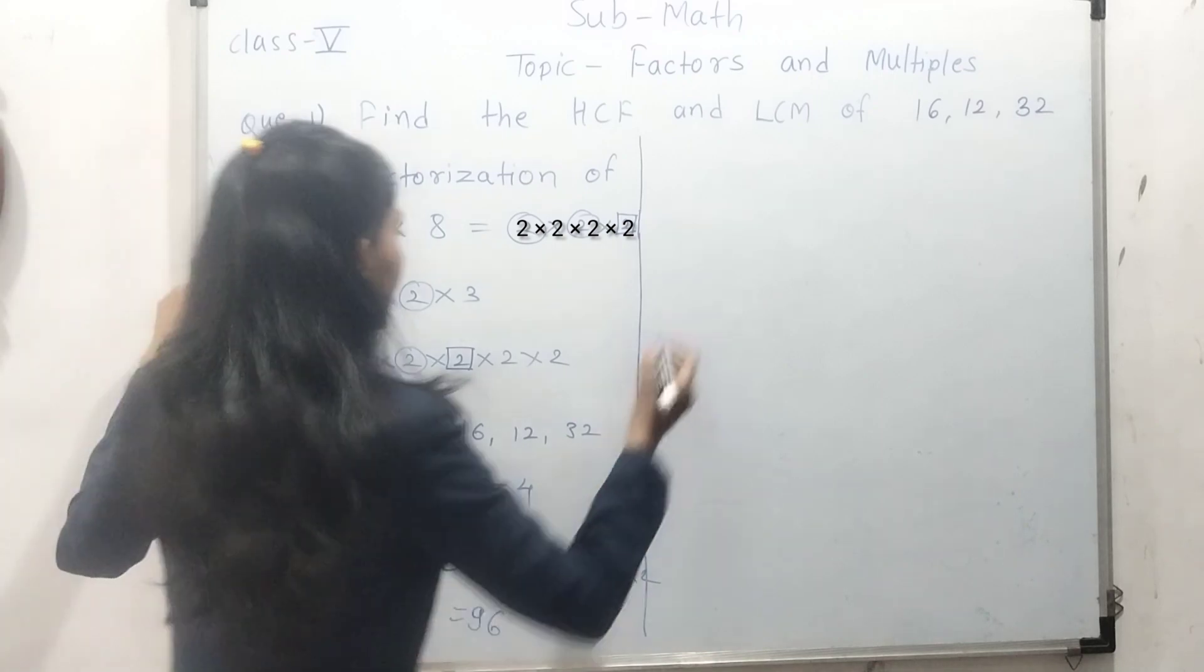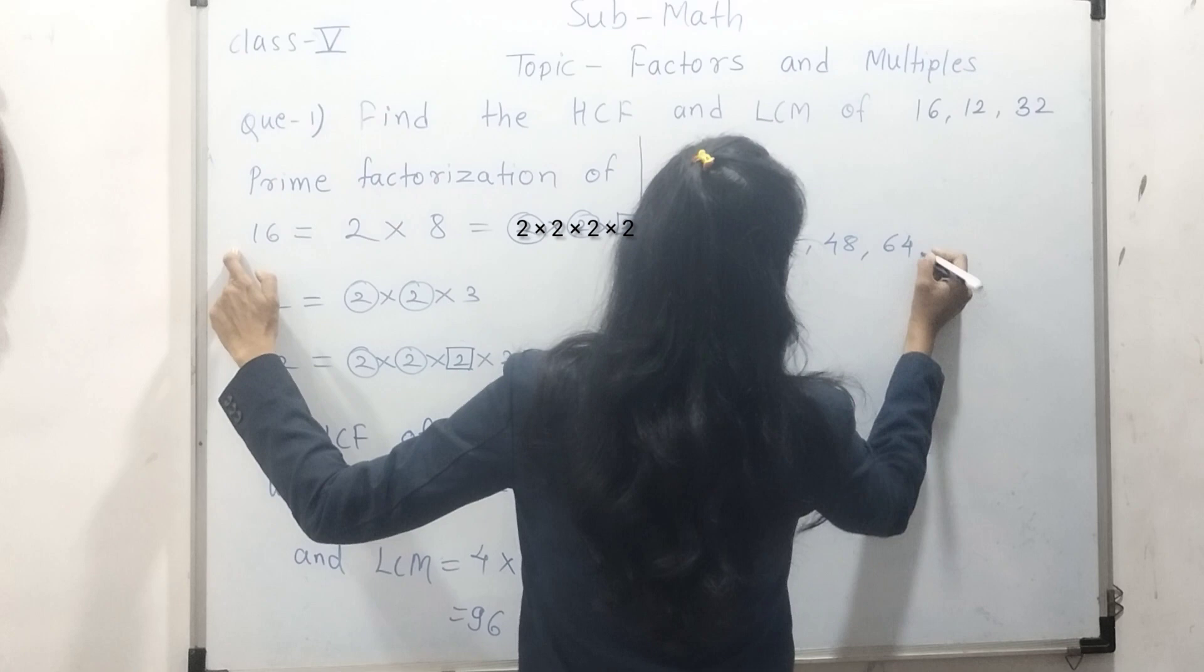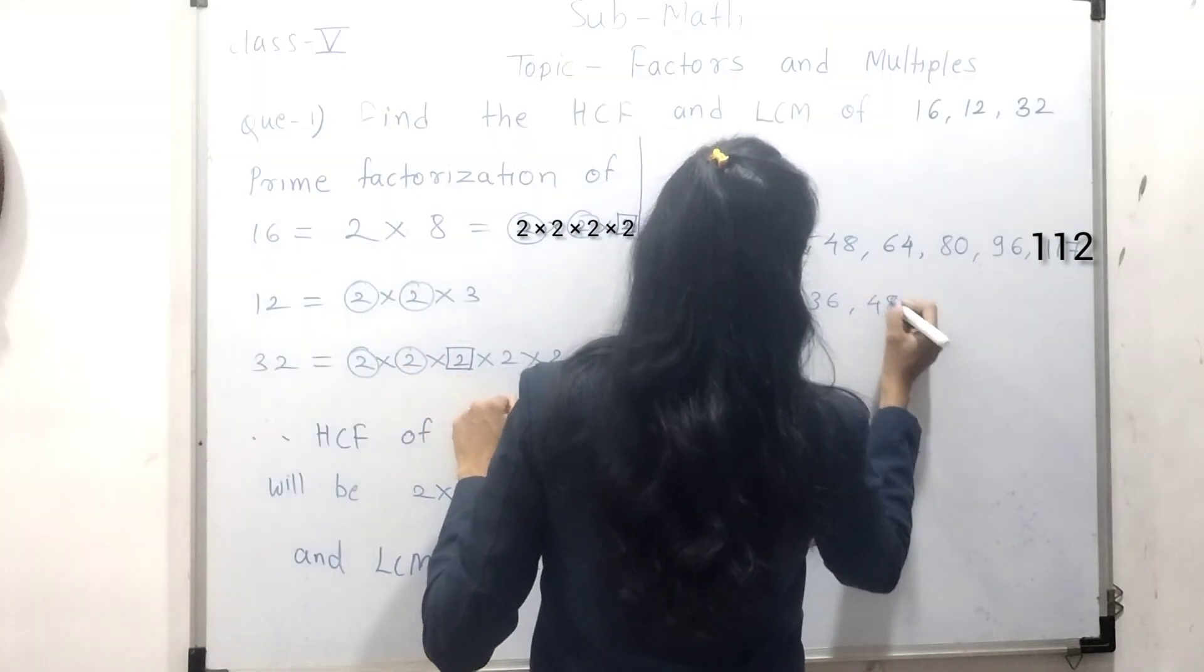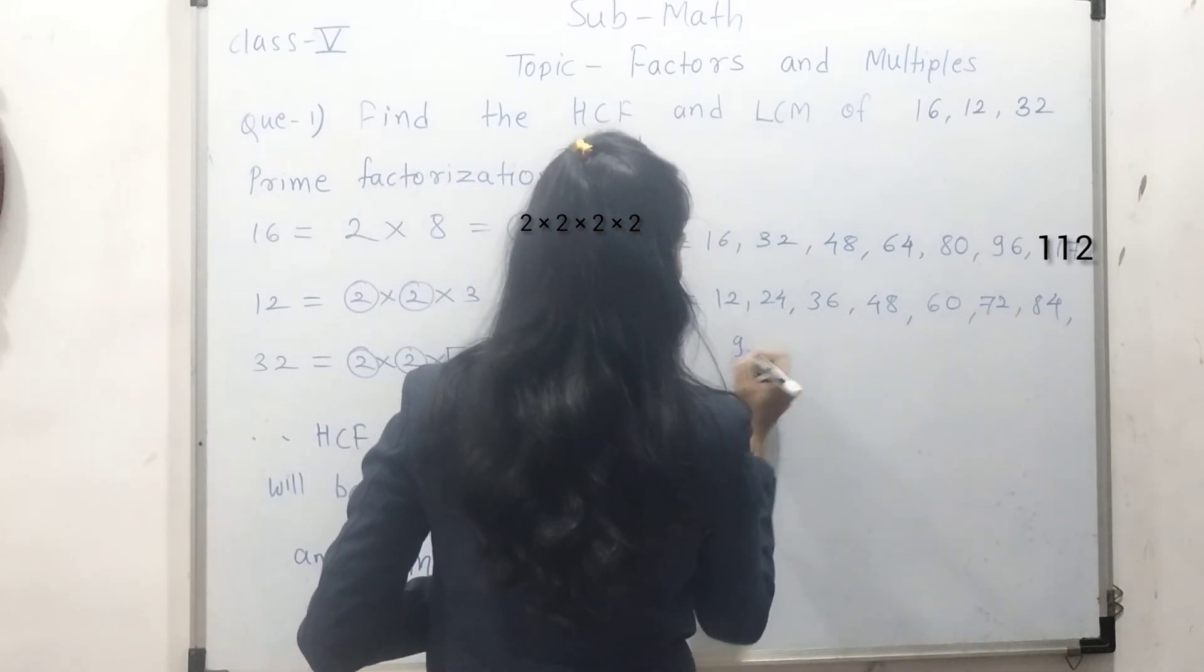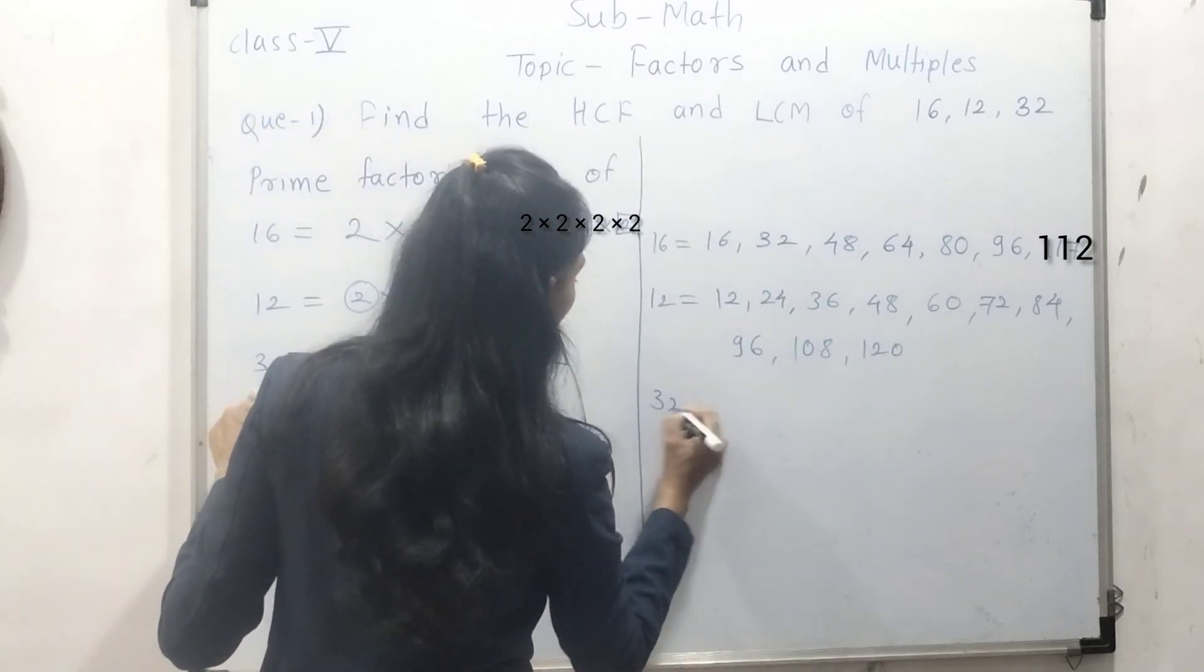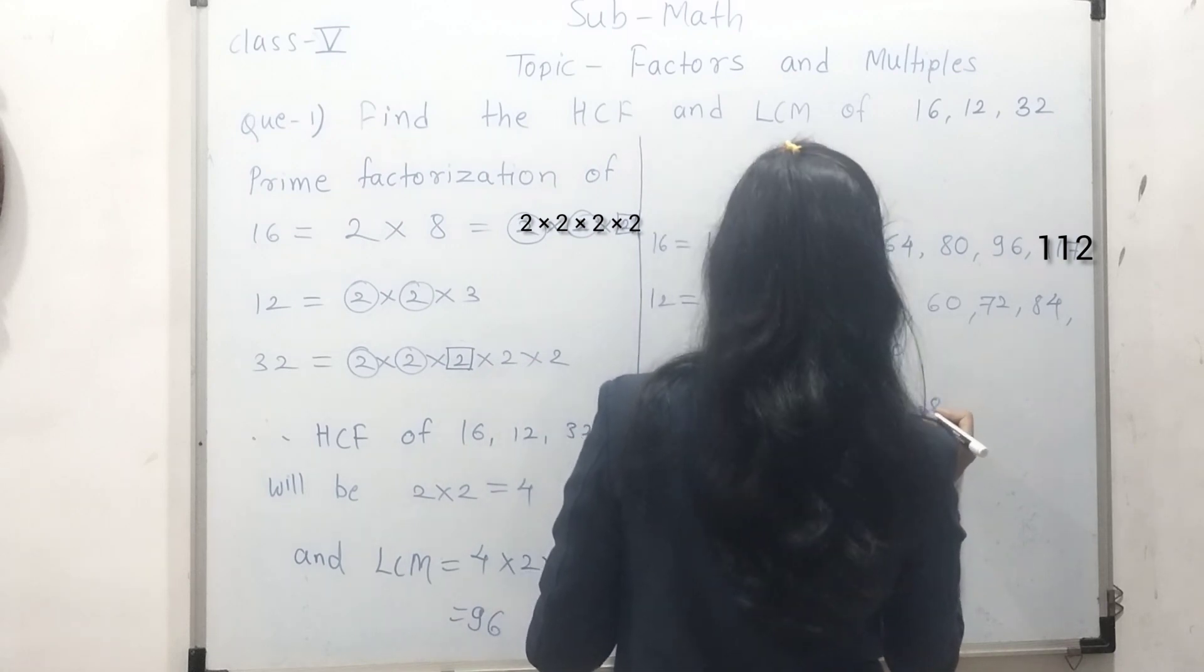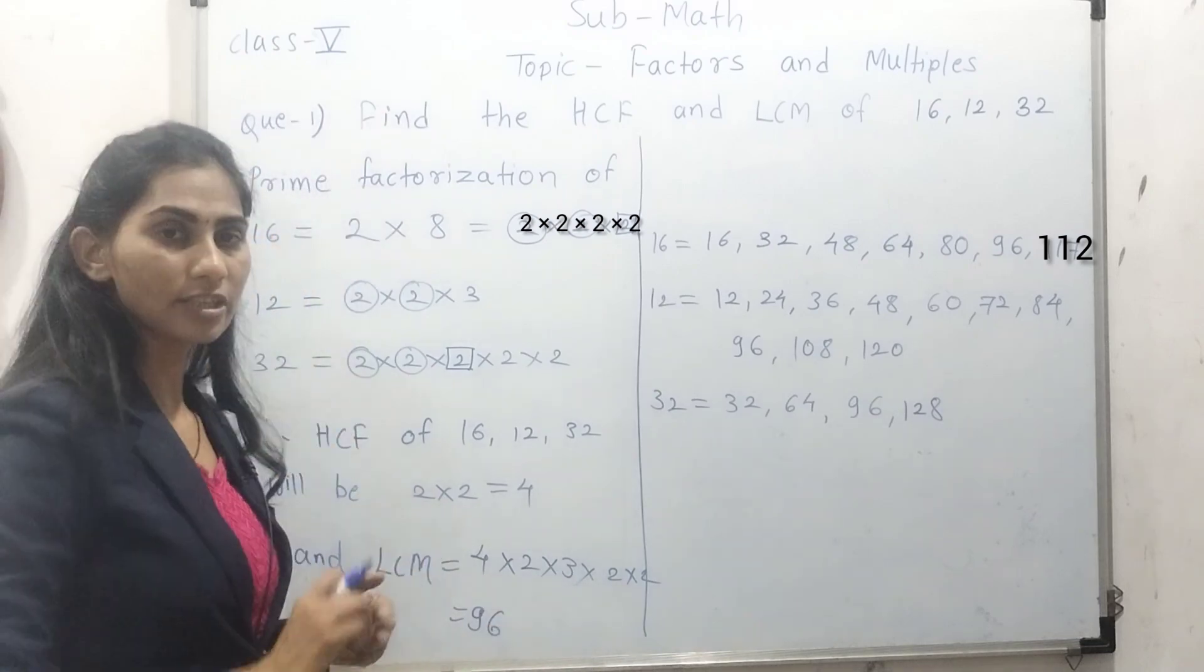You can check by multiplying. 16: one is 16, two is 32, three is 48, four is 64, five is 80, six is 96. 12: one is 12, two is 24, three is 36, four is 48, five is 60, six is 72, seven is 84, eight is 96. 32: one is 32, two is 64, three is 96, four is 128. So here, just observe which number is common.